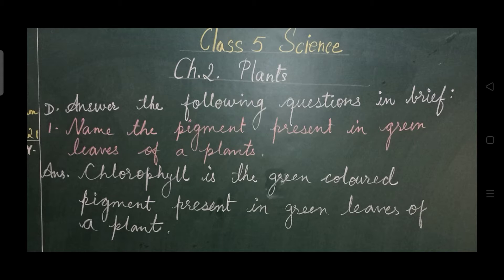Question D: Answer the following questions in brief. Number one is: name the pigments present in green leaves of a plant. Answer: Chlorophyll is the green colored pigment present in the green leaves of the plant.